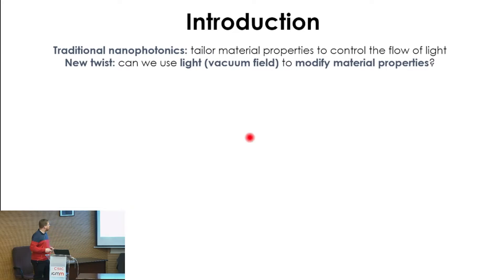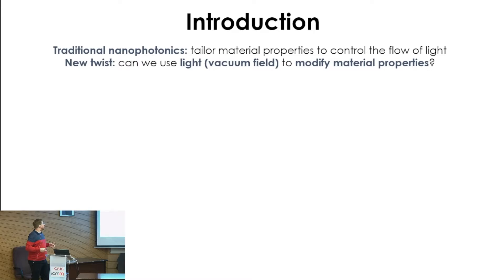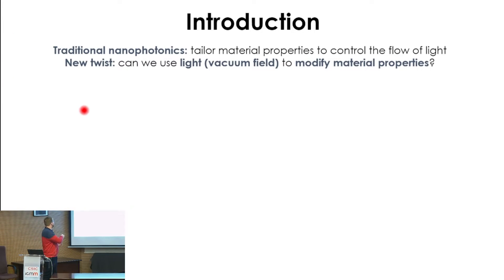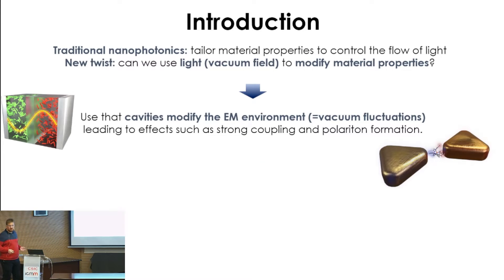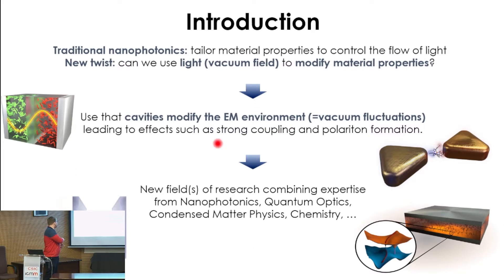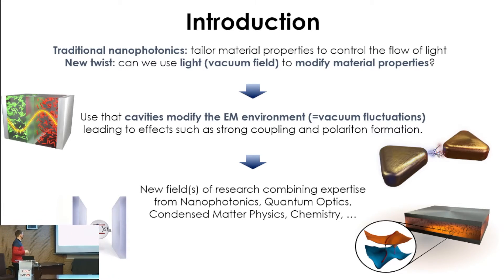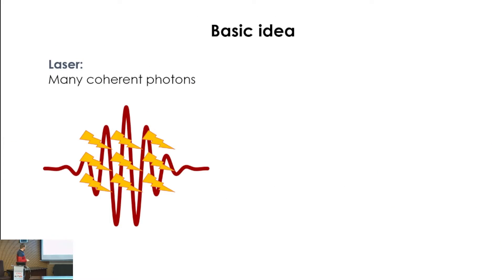As a general introduction, our group comes from nanophotonics, where traditionally the idea is to use materials and tailor them to control the flow of light. But now, for a bit more than a decade, there's a new idea asking whether we can use light — and more precisely the vacuum field — to actually modify material properties. The basic concept is to use cavities, basically mirrors or plasmonic resonators, to modify the electromagnetic environment, which is equivalent to modifying the vacuum fluctuations.